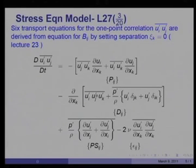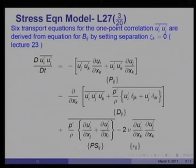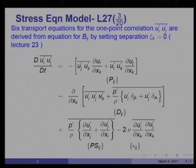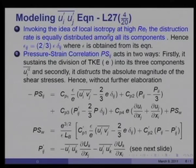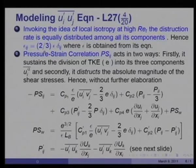This equation is a differential equation mainly because of the convection and diffusion terms. The production term, pressure-strain term, and dissipation terms are simply source terms. We will make use of this fact later in deriving the algebraic stress models, where we will show that the terms making the equation differential can actually be simplified. Invoking local isotropy at high turbulence Reynolds number, the destruction rate is equally distributed among all components, so epsilon_ij is taken as (2/3)*epsilon*delta_ij.